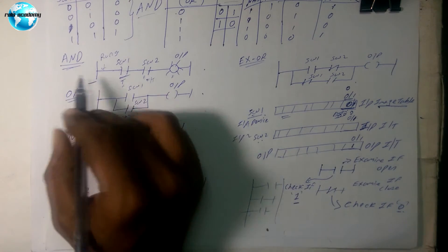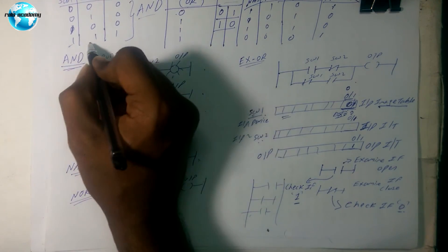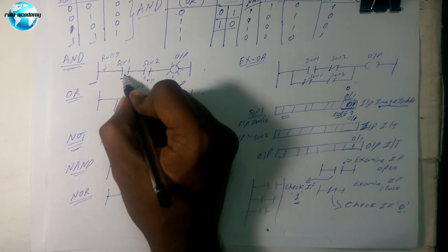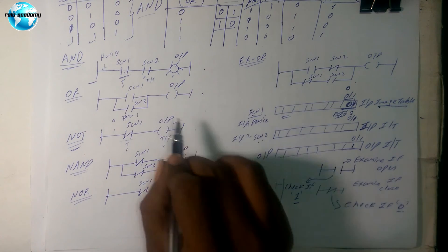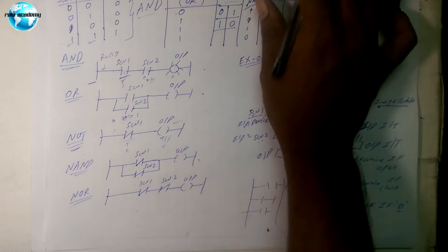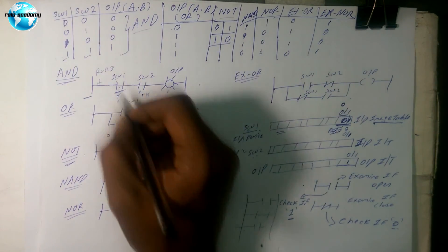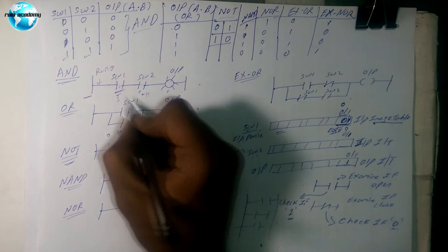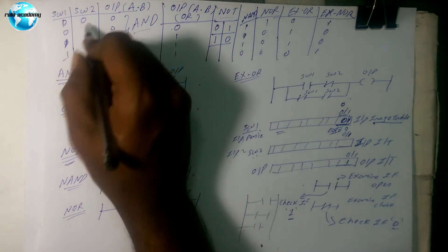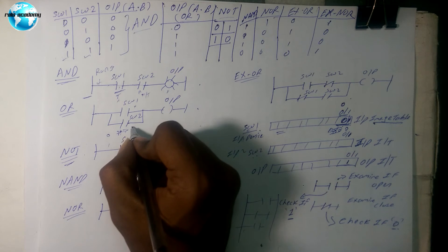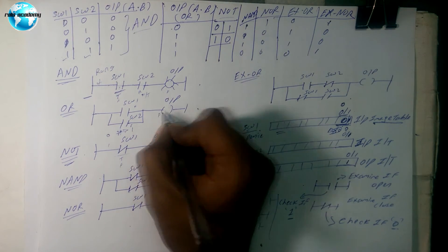Simple. Now let's check the AND gate truth table. Switch one pressed AND switch two pressed: check for one — true; check for one — true; output will glow. Now: switch one not pressed — check for one gives false. Switch two not pressed — check for one gives false. False AND false gives false output.